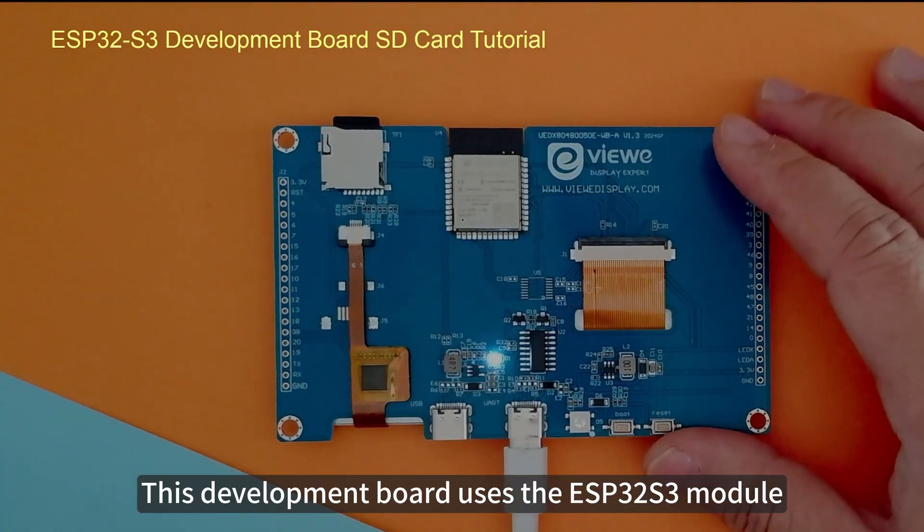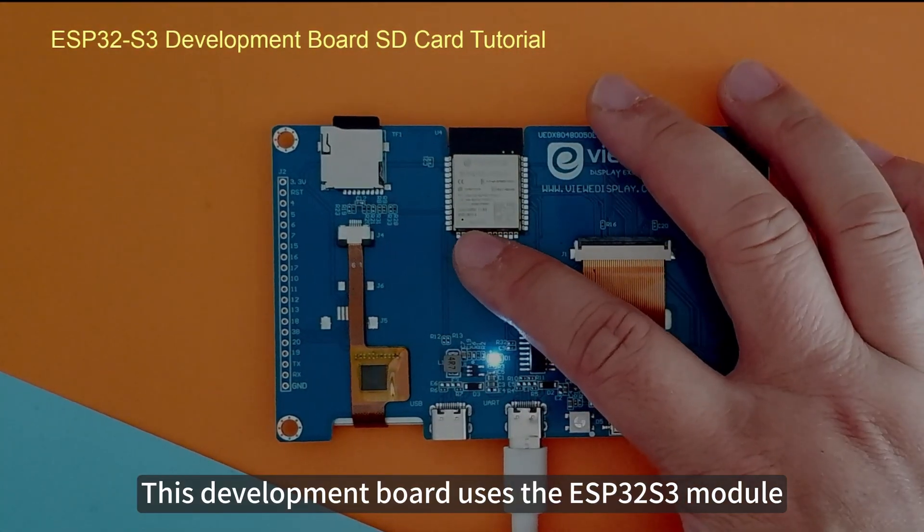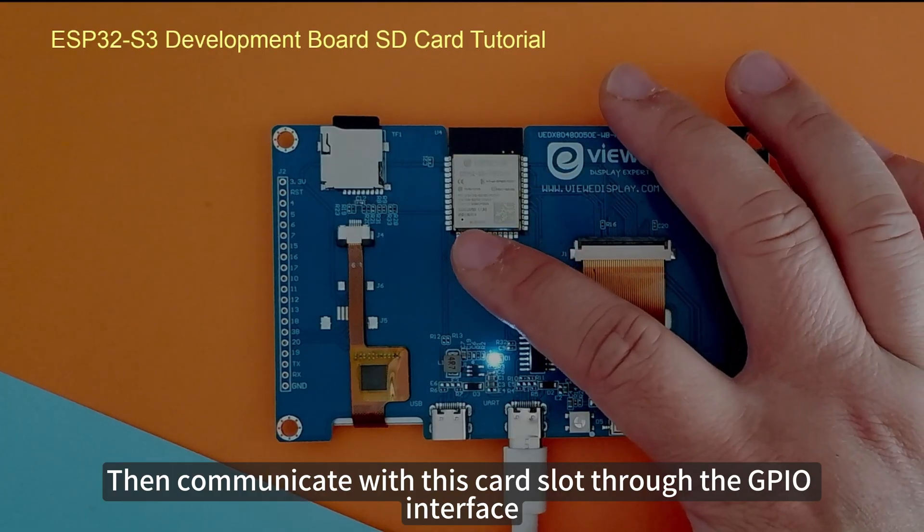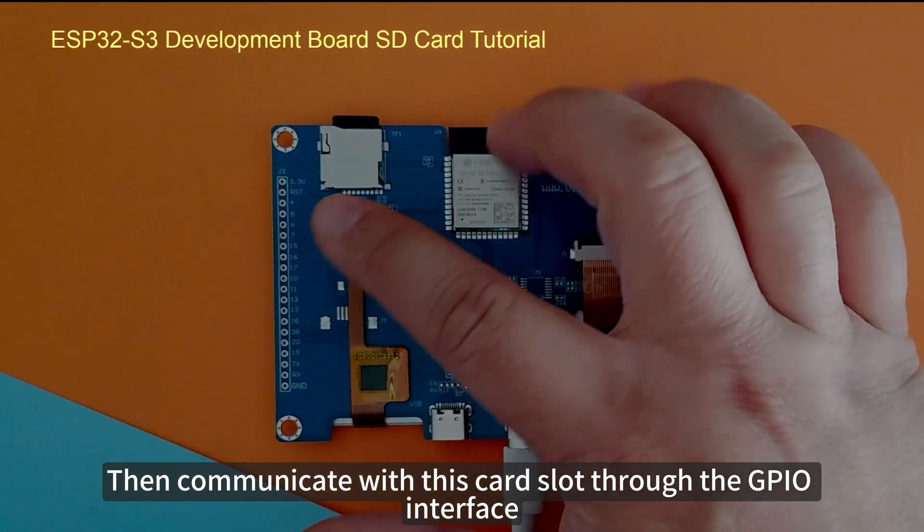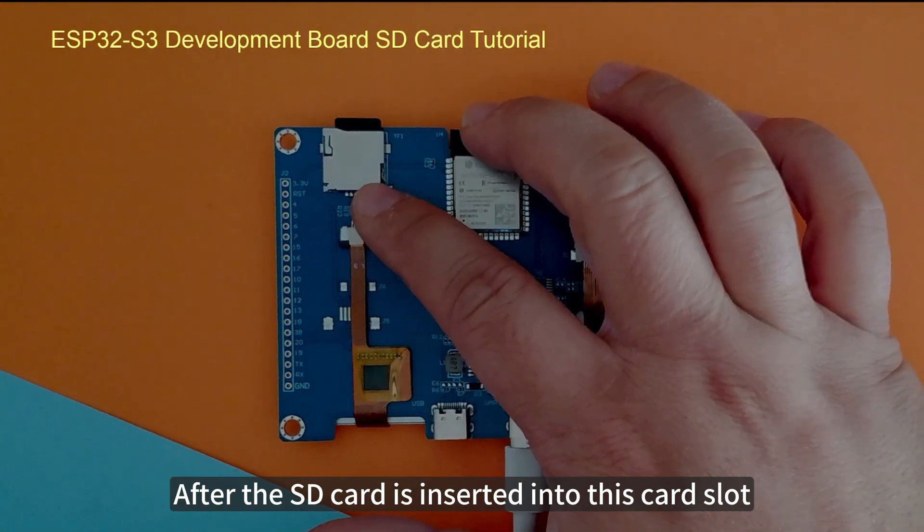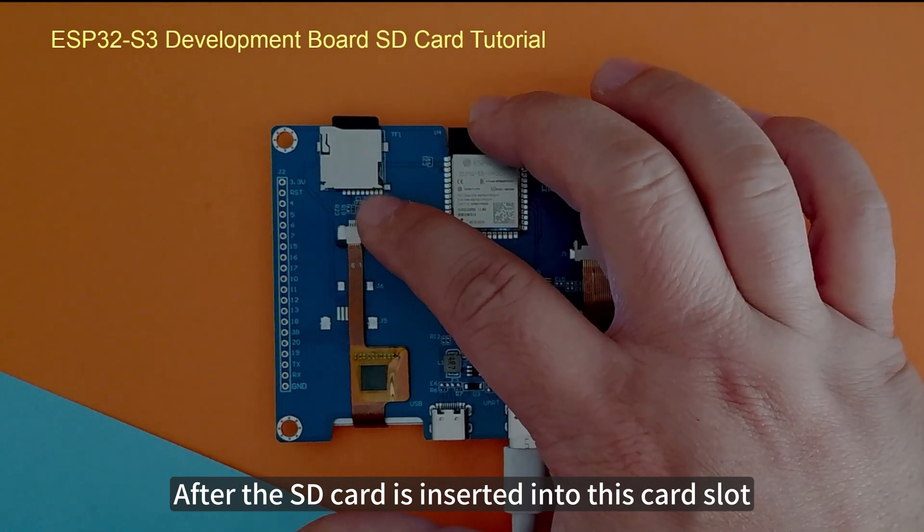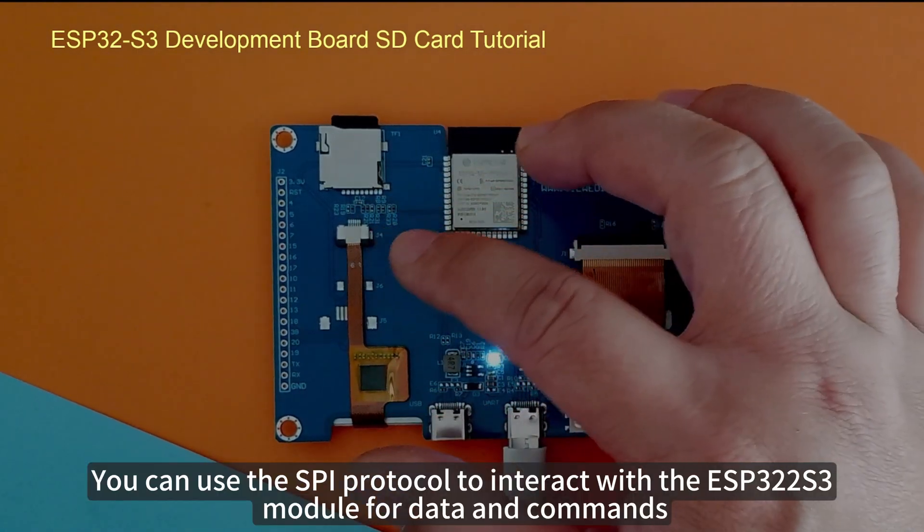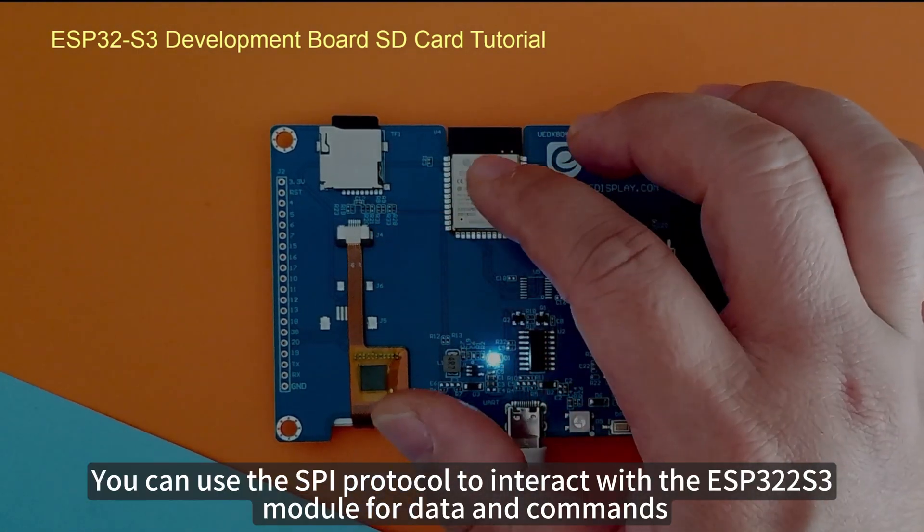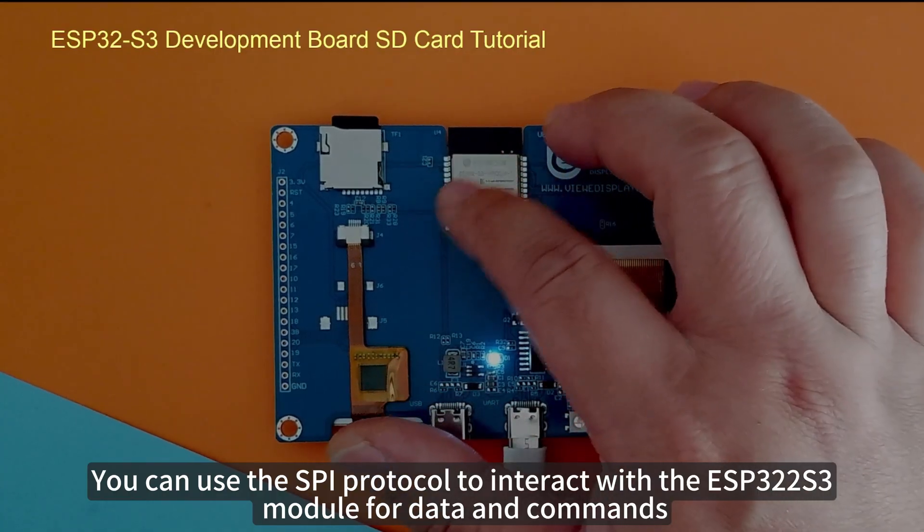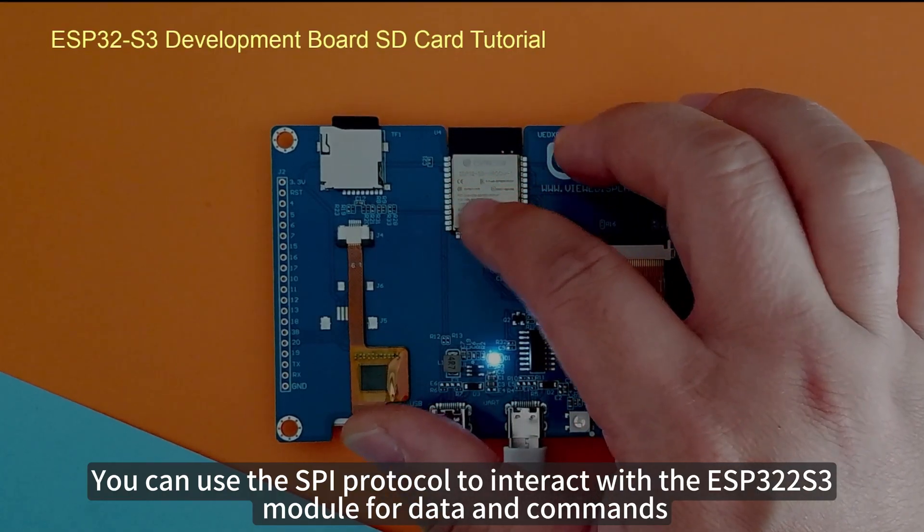This development board uses the ESP32-S3 module, then communicates with this card slot through the GPIO interface. After the SD card is inserted into this card slot, you can use the SPI protocol to interact with the ESP32-S3 module for data and commands.